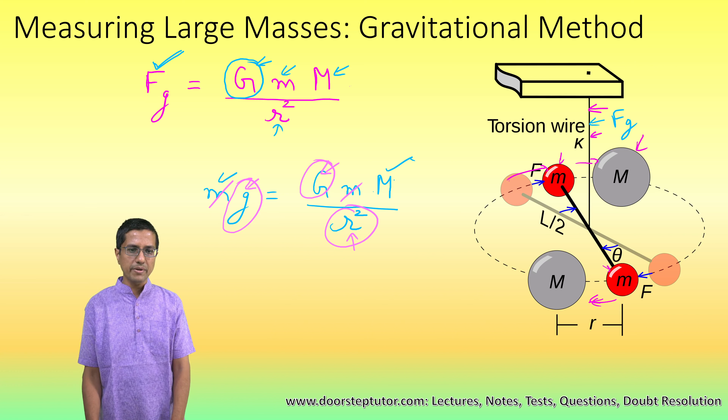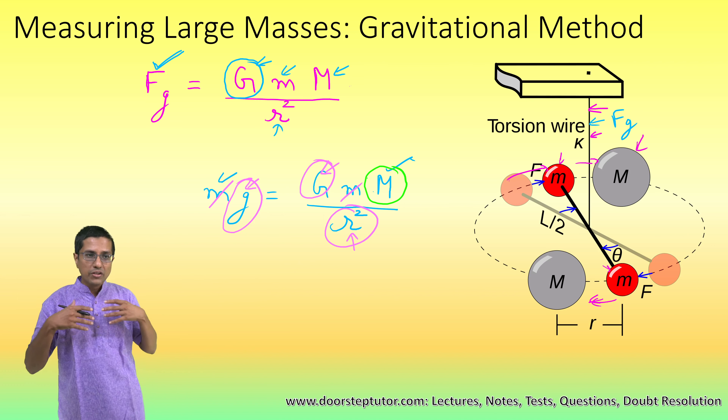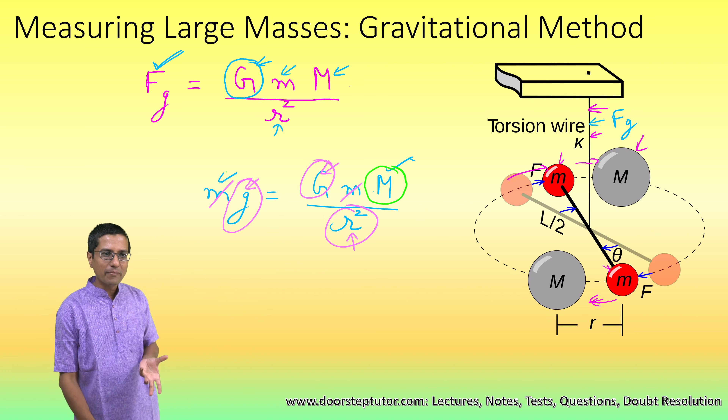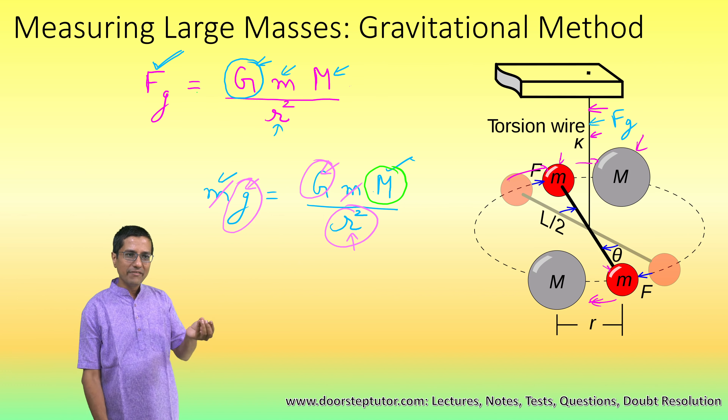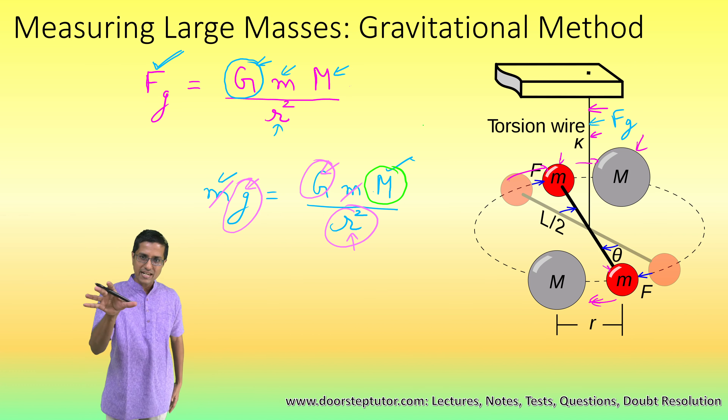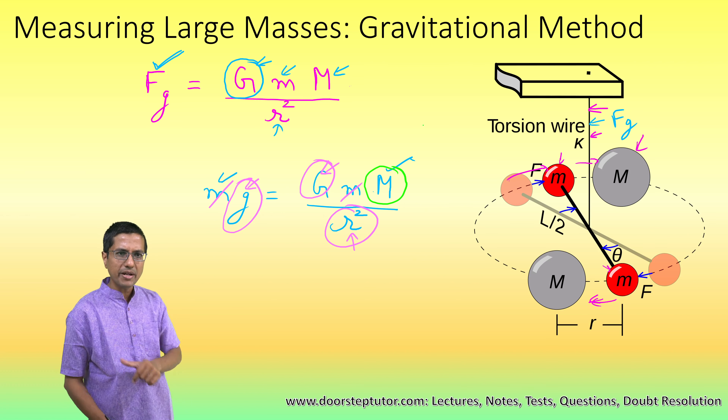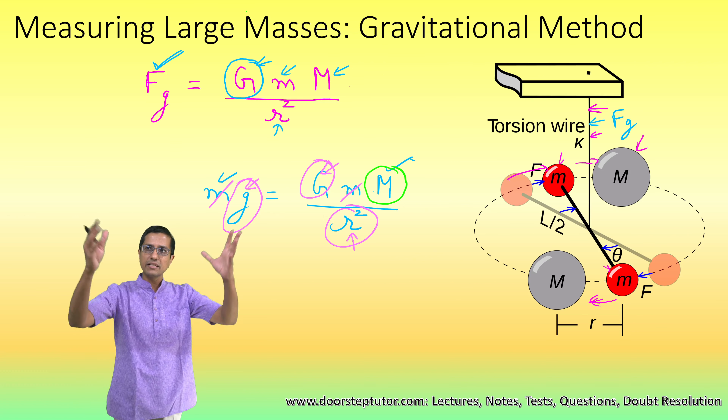As soon as we determined the mass of the Earth, we were also able to determine the mass of the Moon, because we knew the various orbital parameters of the Moon. Using those orbital parameters and the centripetal force, we were able to determine the mass of the Moon, and then so on we were able to determine the masses of various other heavenly objects. So Cavendish determined the value of G, which then determined the mass of the Earth and in turn the mass of everything else. Cavendish was actually brilliant — this is the method we use to find the masses of very large celestial objects.